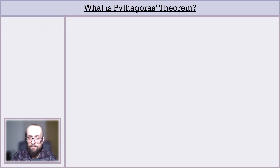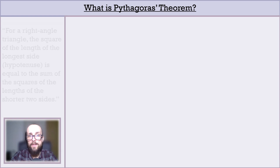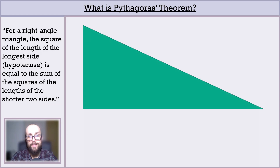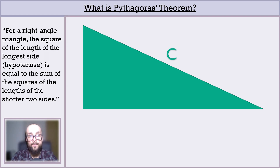Pythagoras theorises that for a right-angled triangle, the square of the length of the longest side — also known as the hypotenuse — is equal to the sum of the squares of the lengths of the two shorter sides. So the first short side squared plus the second short side squared is equal to the longest side squared. Let's consider a right-angled triangle. When dealing with shapes, especially when trying to figure out how long their sides are, it's usually helpful to label them. The hypotenuse — the longest side — is typically labelled with the letter C, whereas the two shorter sides are usually labelled A and B.